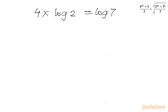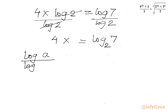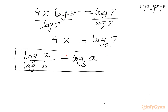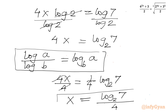Dividing both sides by log 2, we get 4x equal to log 7 over log 2. Since log a over log b can always be written as log a with base b, this becomes 4x equal to log 7 base 2. After dividing both sides by 4, our final answer is x equal to log 7 base 2, divided by 4. This is the only real solution for our exponential challenge. Let's verify this result.